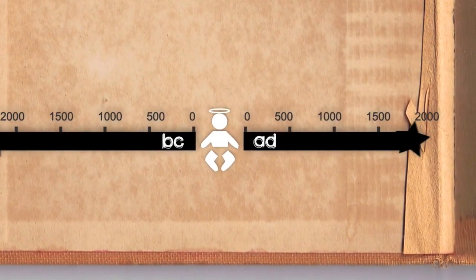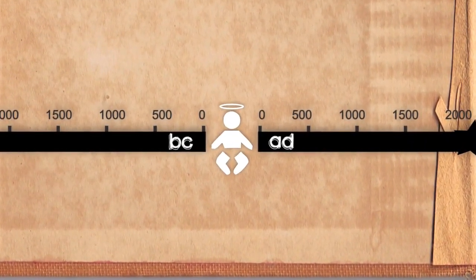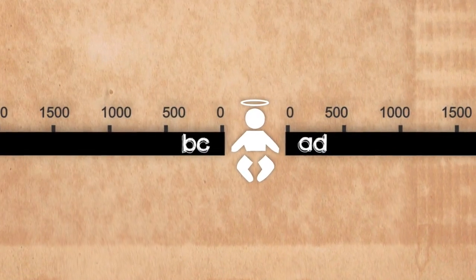Our modern calendar splits time at the approximate date of the birth of Jesus, who Christians believe is the promised Messiah.